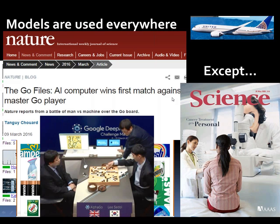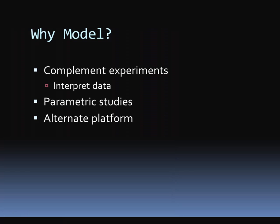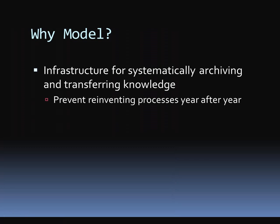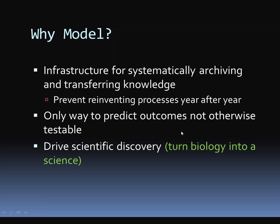Models are used everywhere — perhaps except in our own clinics when we visit doctors to understand what's going on with our bodies and health. Why should we do modeling? Modeling complements experiments, helps us interpret data, allows us to conduct quantitative parametric studies, and provides an alternative platform for understanding complex disease or health delivery systems. It provides a non-invasive and cost-effective way to study these systems, as well as an infrastructure for systematically archiving and transferring knowledge. It is one of the only ways to predict outcomes not otherwise testable and a way to drive scientific discovery.